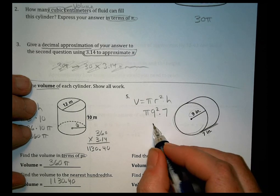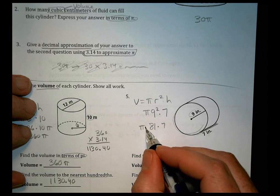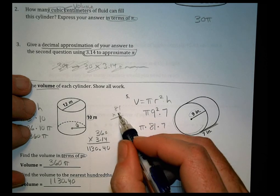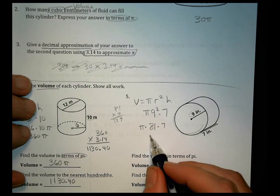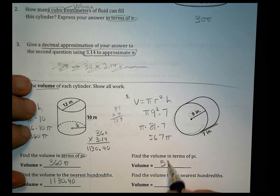So we end up with 81 times 7 times pi. And 81 times 7, we have 7. And 8 times 7 is 56. So we have 567 pi. And that would be our area in terms of pi.